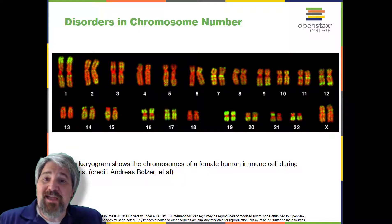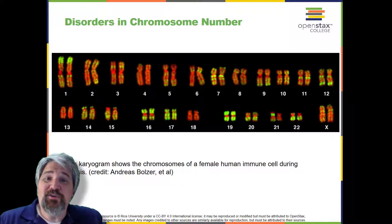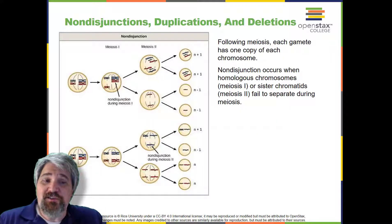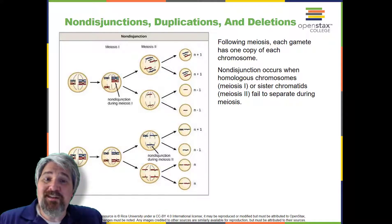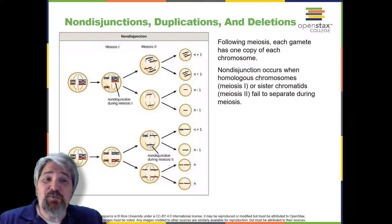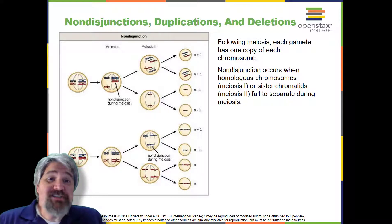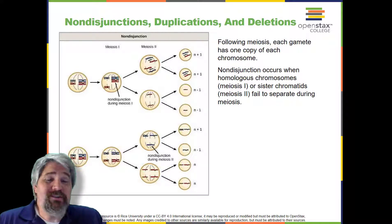By observing a karyogram, geneticists can actually visualize the chromosomal composition of an individual to confirm or predict genetic abnormalities in offspring even before birth. Of all the chromosomal disorders, abnormalities in chromosome number are the most easily identifiable from a karyogram. Disorders of chromosome number include the duplication or loss of entire chromosomes, as well as changes in the number of complete sets of chromosomes. They are caused by non-disjunction, which occurs when pairs of homologous chromosomes or sister chromatids fail to separate during meiosis.